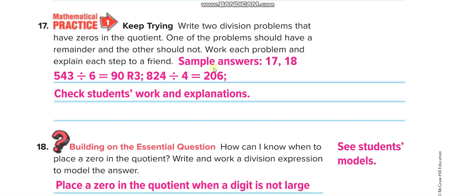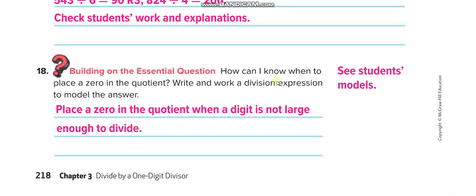Last one: How can I know when to place a zero in the quotient? Place a zero in the quotient when a digit is not large enough to divide, like when the digit is less than the divisor. I hope you understand the lesson.